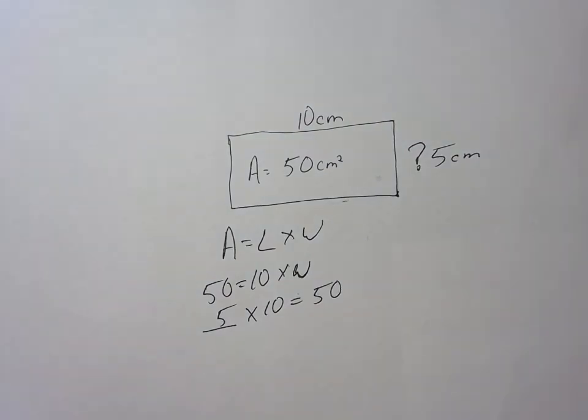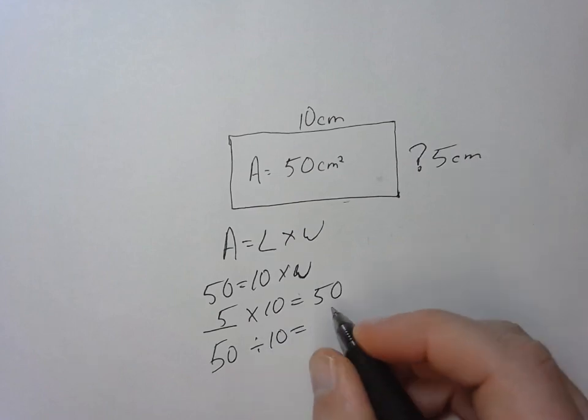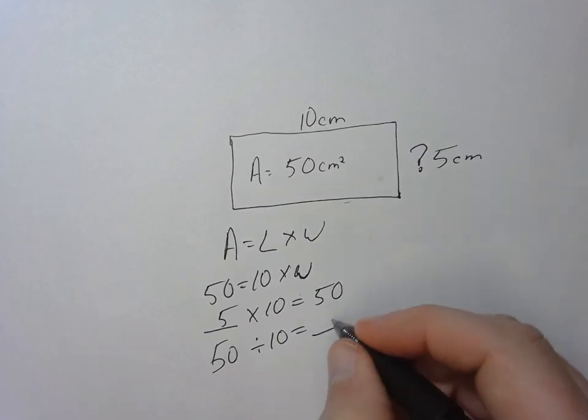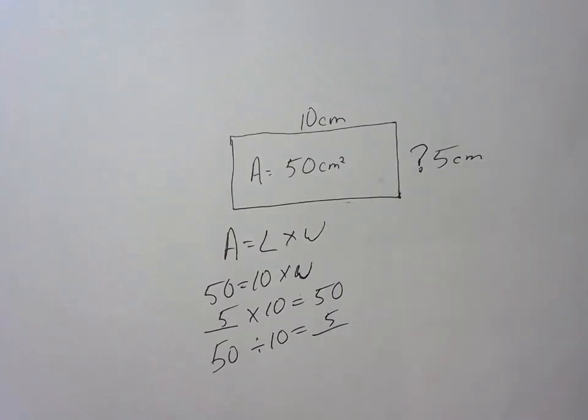Because the inverse of multiplication is division, I can say 50 divided by 10 equals blank. That equals my missing side because 50 divided by 10 is going to give me 5 as well. So I use what I know to figure out what I don't know.